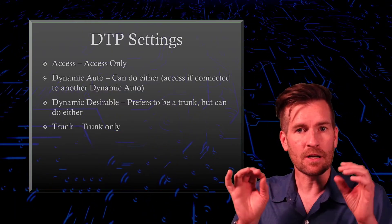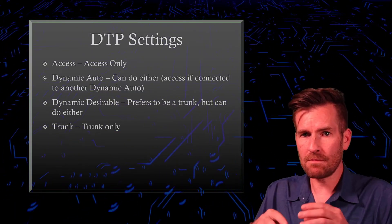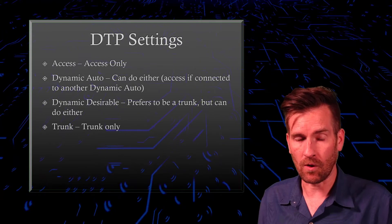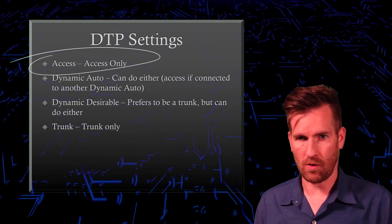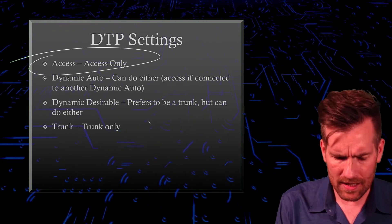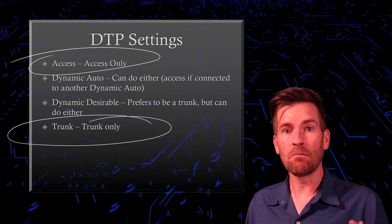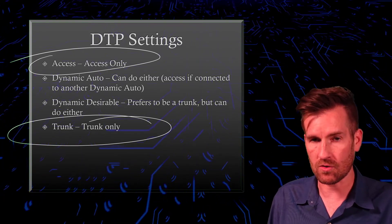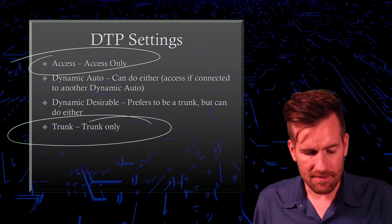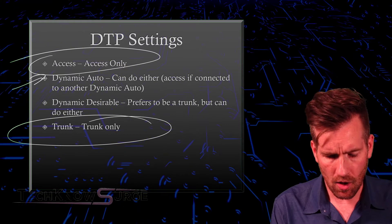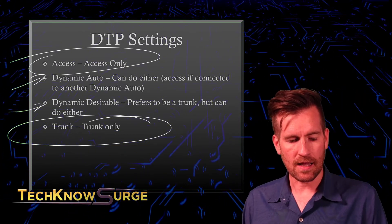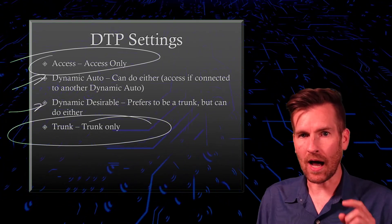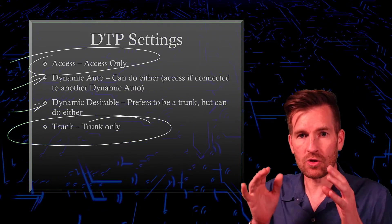When it comes to dynamic trunking protocol settings, your port can be assigned one of four different settings. First, we can set up a port as an access port, which just wants to be an access port. Or we could set it up as a trunk port, where multiple VLANs can go across it — whereas an access port carries only one VLAN. Then we have dynamic auto and dynamic desirable. Dynamic desirable says: I desire to be a trunk line, so if I have the option, I am going to try to be a trunk line.